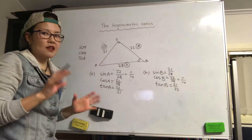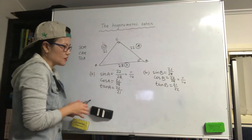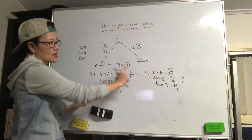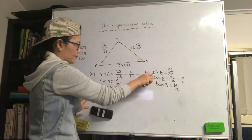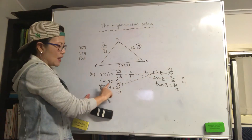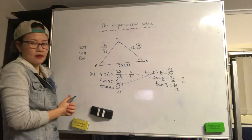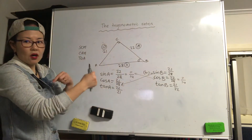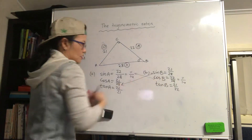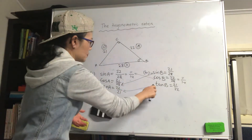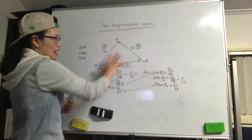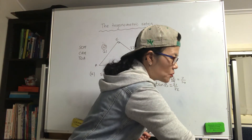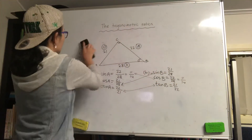Something interesting — you might notice that sine A is the same as cos B, and cos A is the same as sine B. And if you look at tan A and tan B, they're flipped — they are reciprocals of each other. So these angles are related in that way — just remember that.